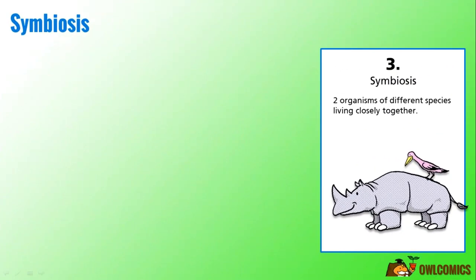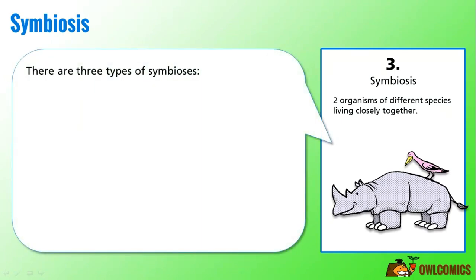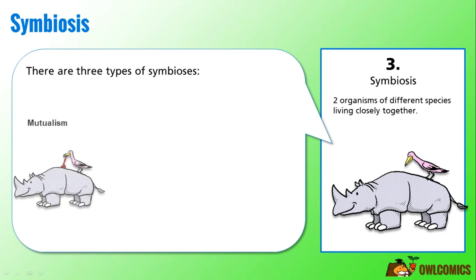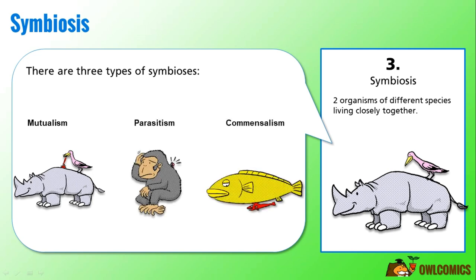The third type of interaction between organisms is symbiosis. There are three types of symbiosis: mutualism, parasitism, and commensalism.